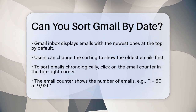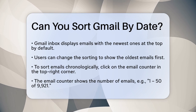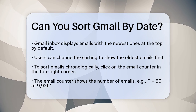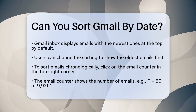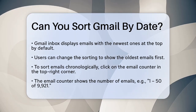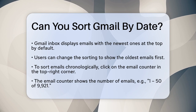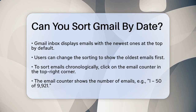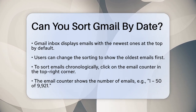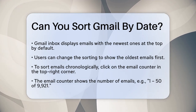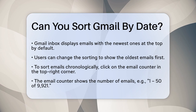Sorting emails by date in Gmail is actually quite straightforward. By default, Gmail displays your emails with the newest ones at the top, but you can easily change this to show the oldest emails first.